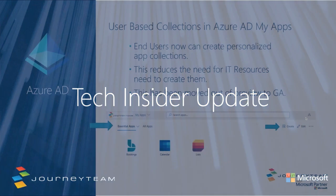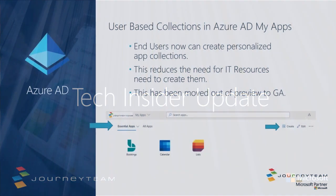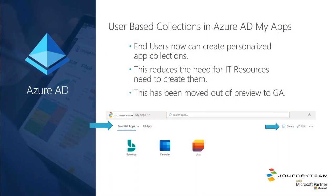Jumping into Azure AD, a pretty cool new feature that's available — it went general availability. Head out to myapps.microsoft.com. If you have an Office 365 tenant, pop out to myapps.microsoft.com and you will see this little Create button.